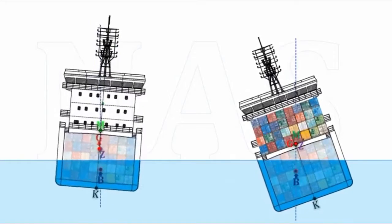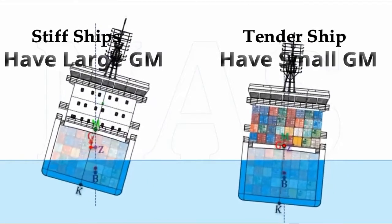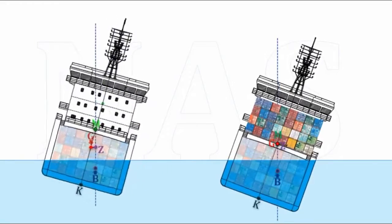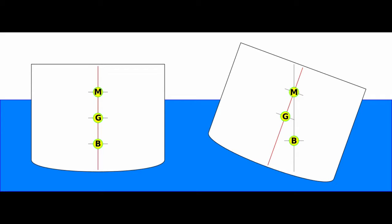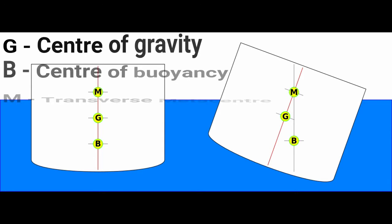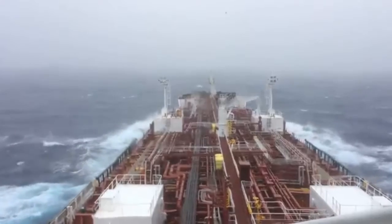Moving on to the differences between stiff and tender vessels. Number one: a stiff vessel has a large GM whereas a tender vessel has a small GM. For people who don't know what GM means — G refers to the center of gravity which acts downwards, B means center of buoyancy acting upwards, and M is the transverse metacenter of the ship's body, also known as the metacentric height.